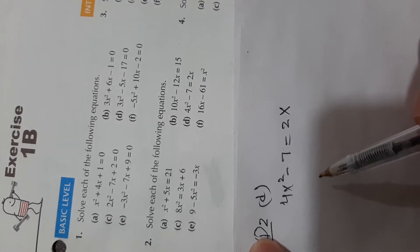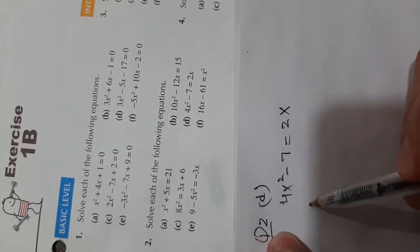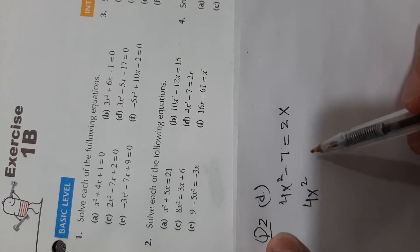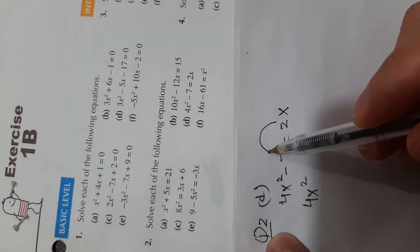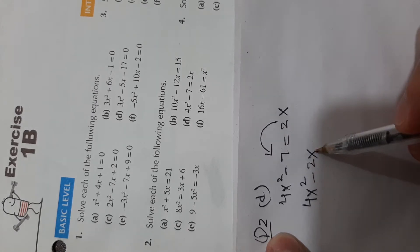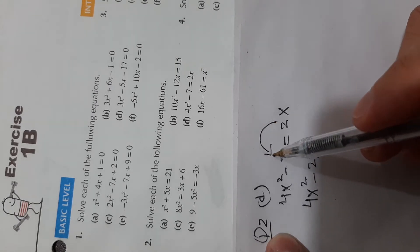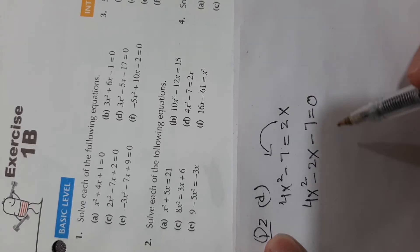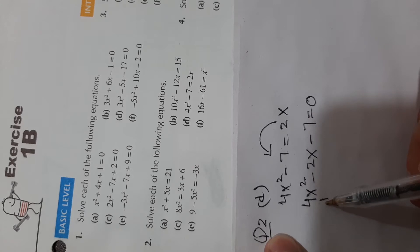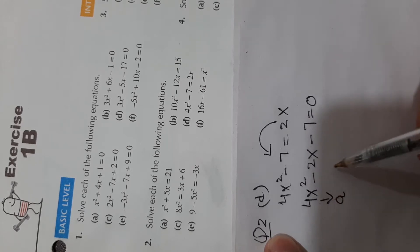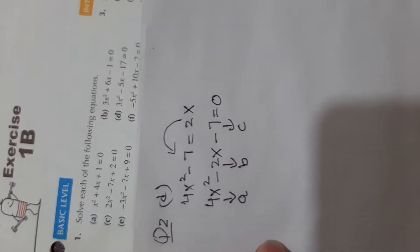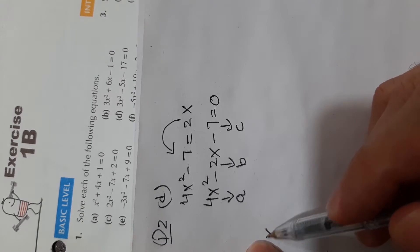We need to solve this, meaning we need to find the value of x, and we are going to use the quadratic formula. Arrange this equation in standard form by moving 2x to the left side — it will become minus 2x — so 4x squared minus 2x minus 7 equals 0. This is the standard form. The coefficient of x squared is a, the coefficient of x is b, and the constant is c.